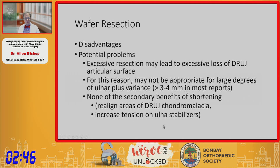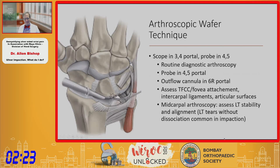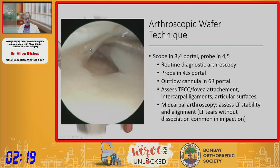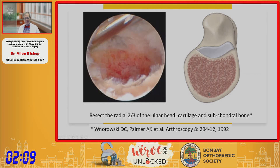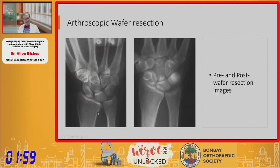Wafer resection is minimally invasive with no risk of non-union, no hardware issues, and it allows arthroscopic assessment of the joint, early motion, and no casting. The potential problems are that excessive resection may lead to loss of joint cartilage surfaces, so it should not be done in large defects, and you don't get the secondary benefits of realigning areas of chondromalacia or increasing tension on ulnar stabilizers. The technique is fairly simple: visualize the tear, debride a little of the articular disc, then use a shaver and burr down below cartilage and subchondral bone, typically over about two-thirds of the ulnar head.